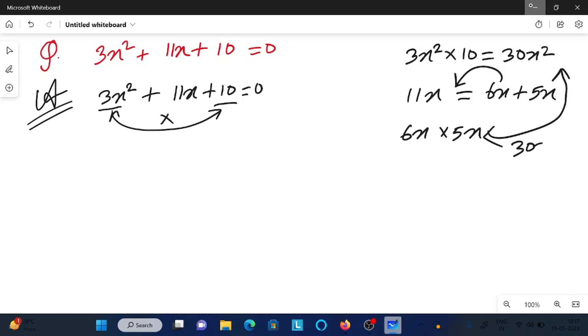So when they're equal and when you add this that's 11x, then you can take these terms. So we can write 3x square plus 6x plus 5x plus 10 equal to 0.